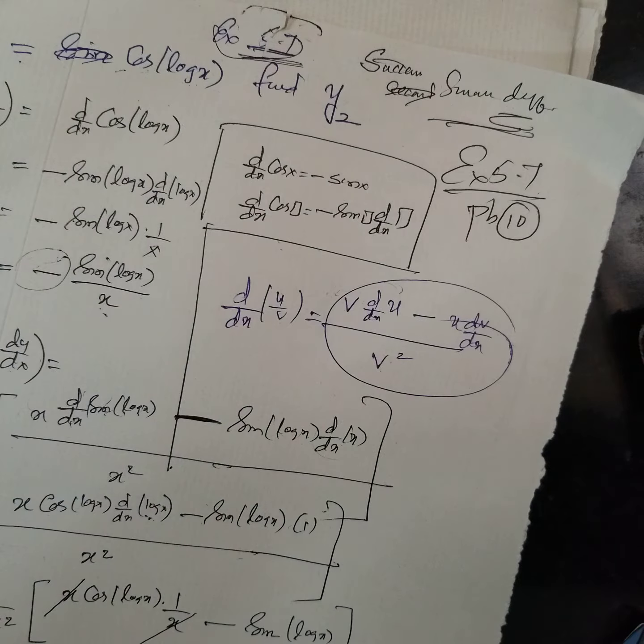cos(box) into the differential coefficient of the box, where the box is log x. Then minus sin(log x) times the differential coefficient of x, which is 1. This gives 1/x, so combining: x·cos(log x)·(1/x) minus sin(log x), all divided by x squared. Simplifying: cos(log x) minus sin(log x), divided by x squared.